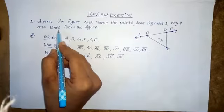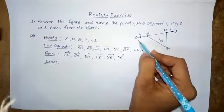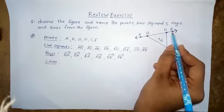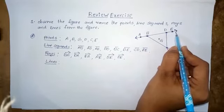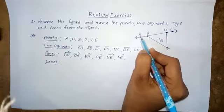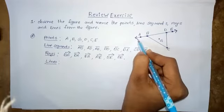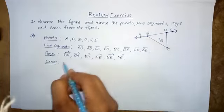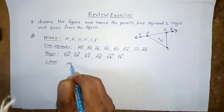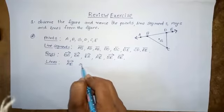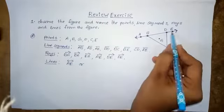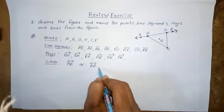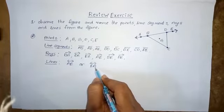Next, identify the lines from the figure. In this diagram only one line is present — that is line AE. From point E it is moving endlessly in one direction, and from point A it is also moving endlessly in one direction — both sides move endlessly. So AE is a line, and EA is also the same line.